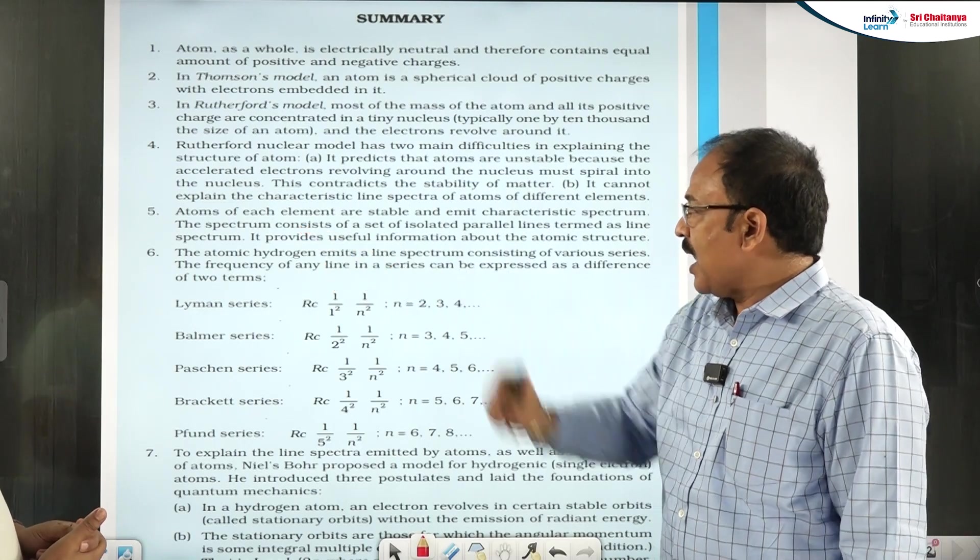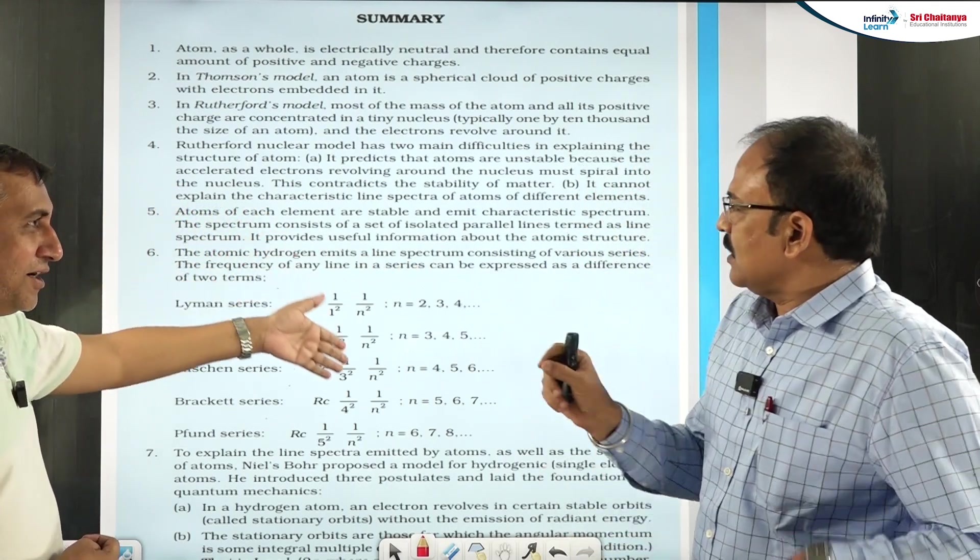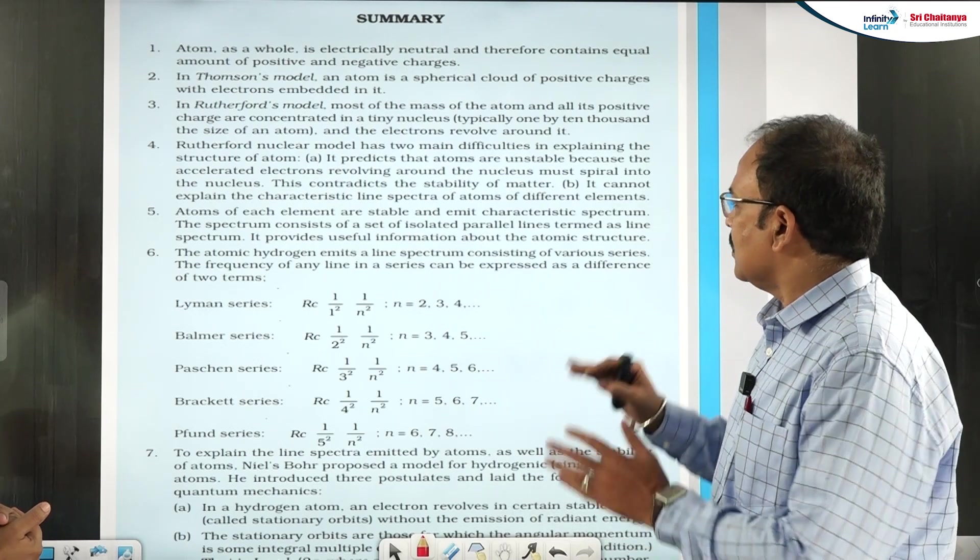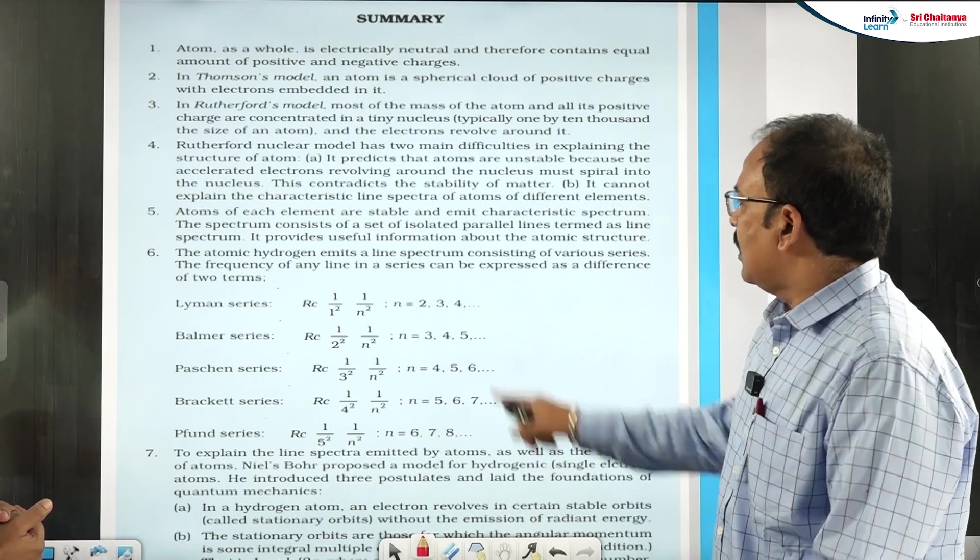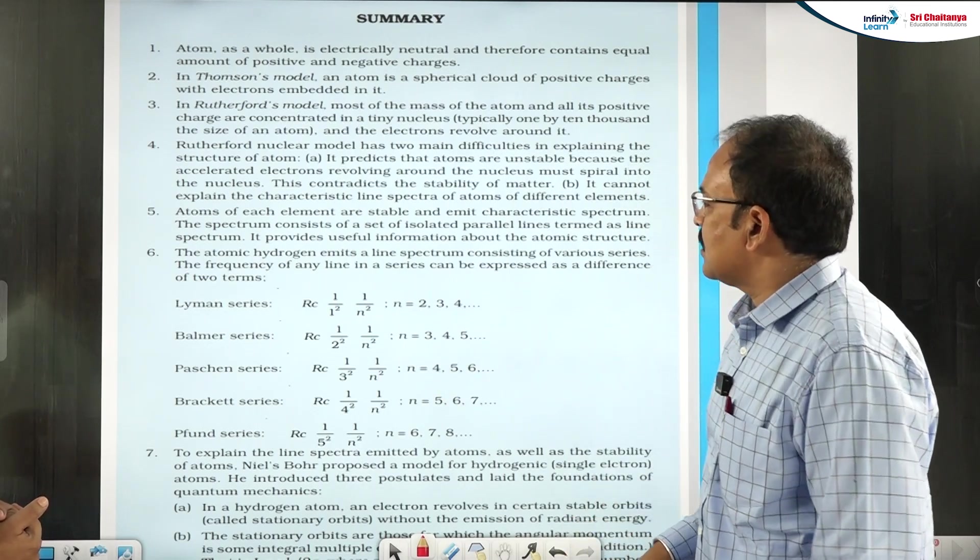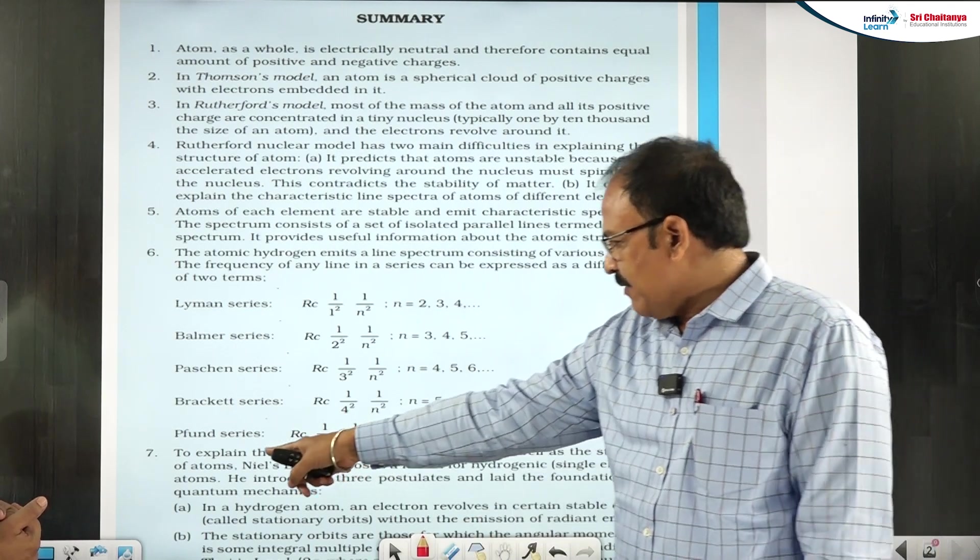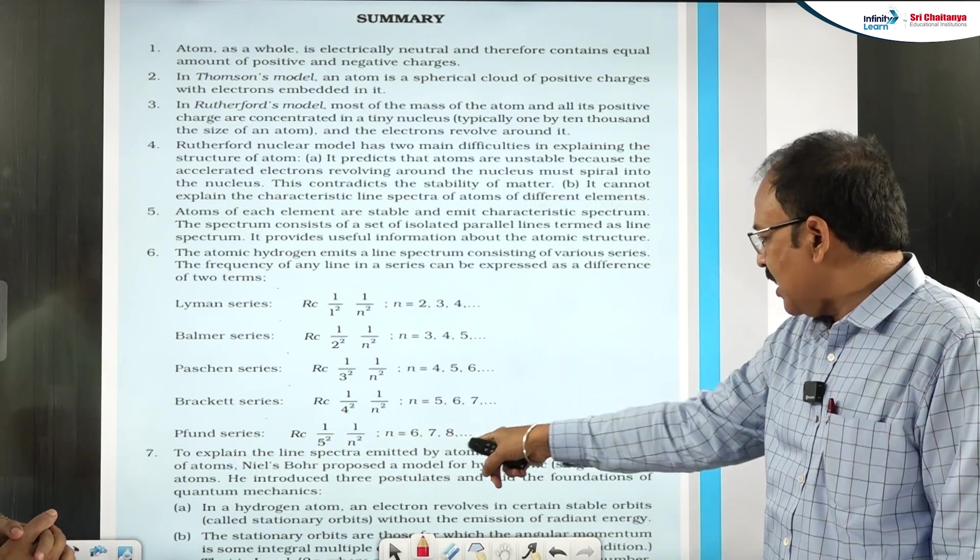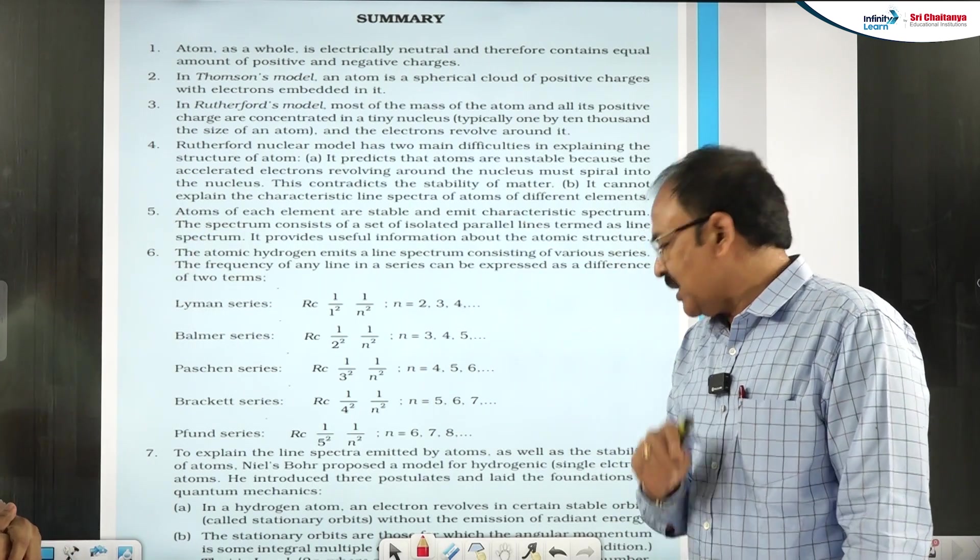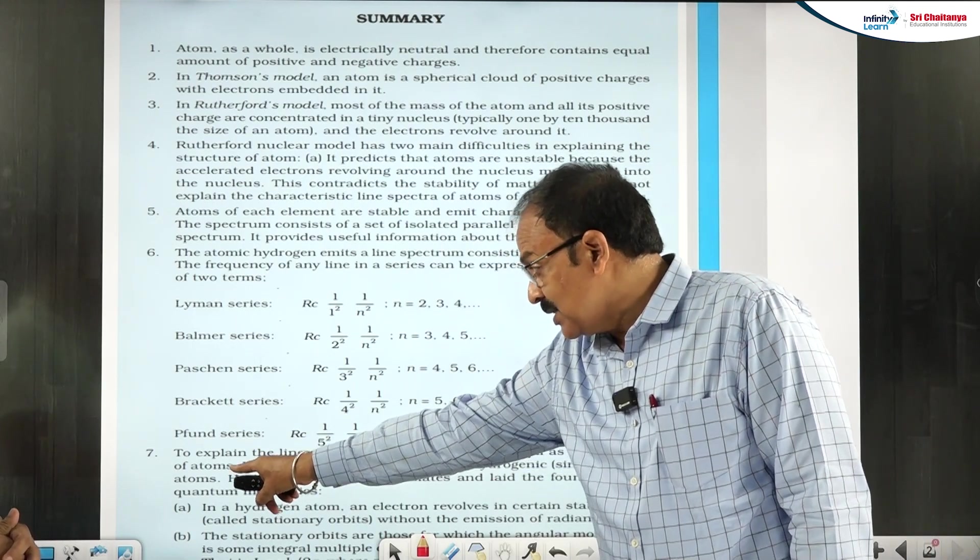Look at this: each element is stable. Atoms of each element are stable and emit characteristic spectra. I am remembering same line term in the NEET. Yes, they have picked up the same sentence as it is word to word, letter to letter. And in the same spirit, they have given this. And how this sentence is correct, that is explained in the subsequent points. Now, these are the various spectra that is released by hydrogen atom. Now look at the seventh point sir. To explain the line spectra emitted by atoms. So line spectra means line spectra is nothing but the characteristic spectra, characteristic spectra emitted by atoms as well as the stability of atoms. So this is the point to be understood.